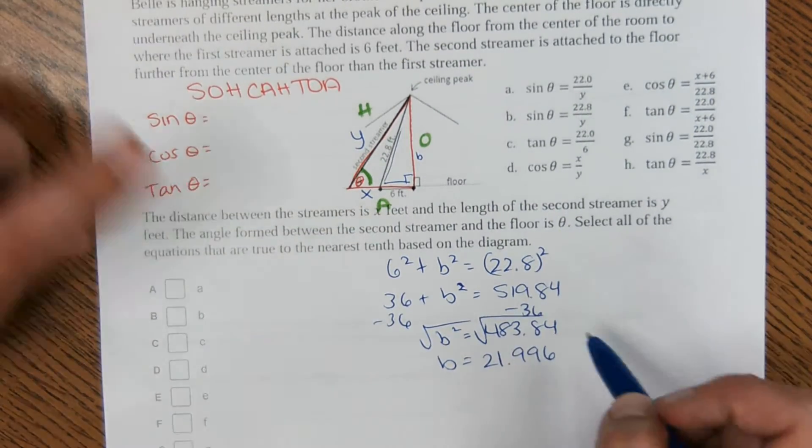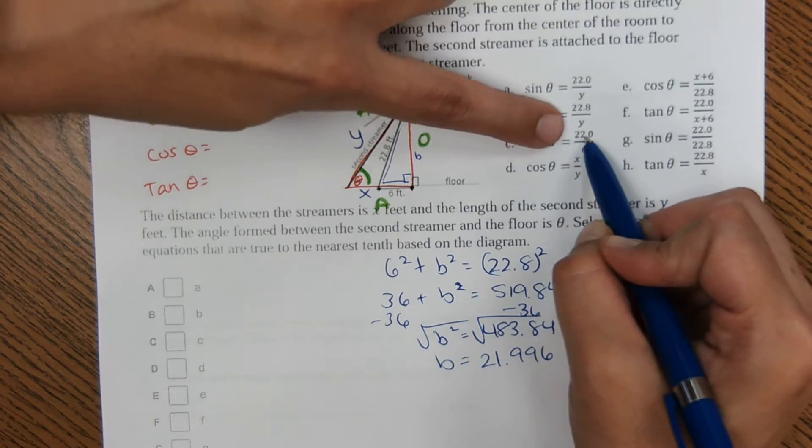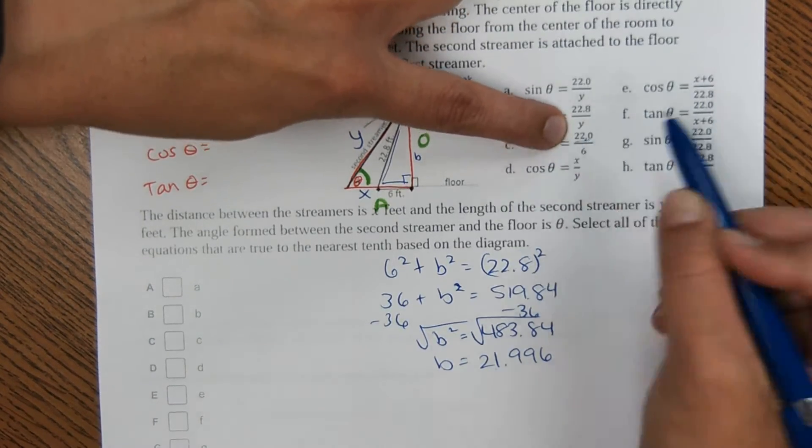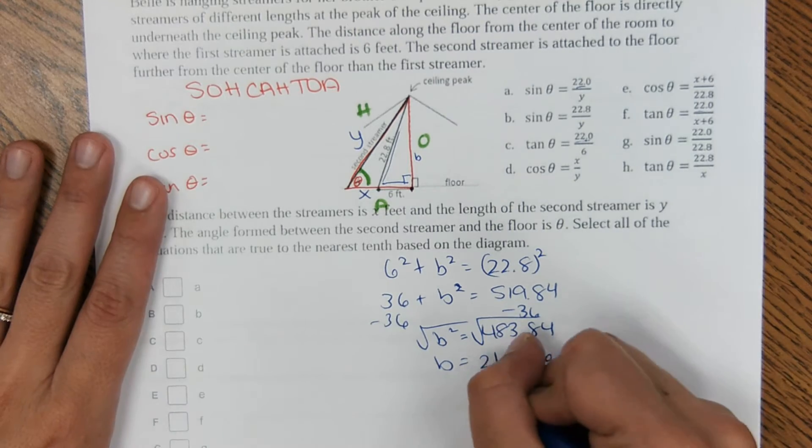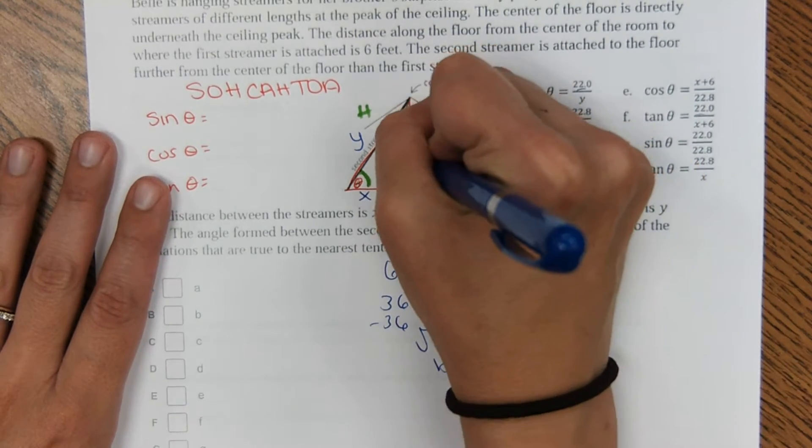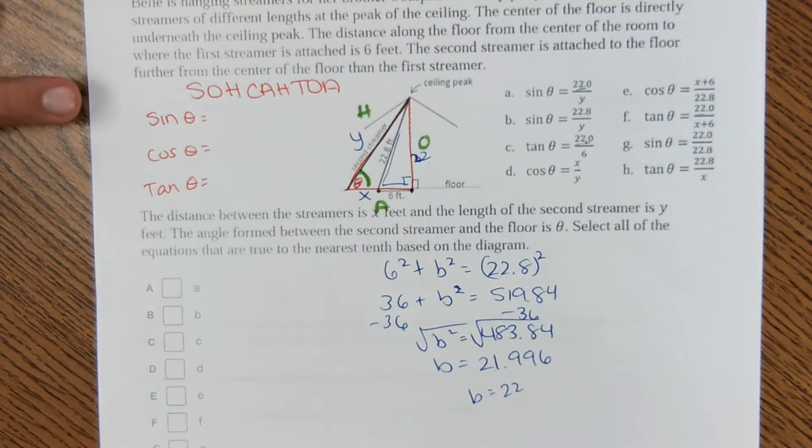Again, no instructions here on how to round it, but when I look at the answer choices, there is a clear 22 in a lot of my answer choices. So I know I'm on the right track, and we're going to round this to 22. So this will be 22 in our ratios that we create.